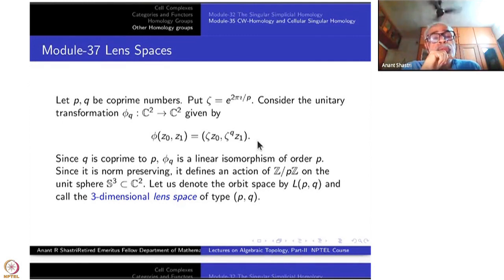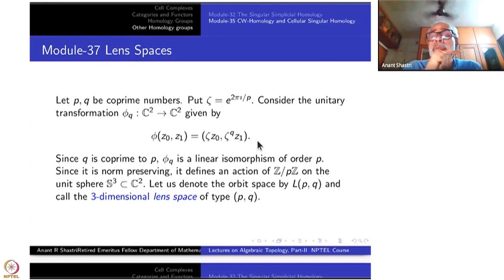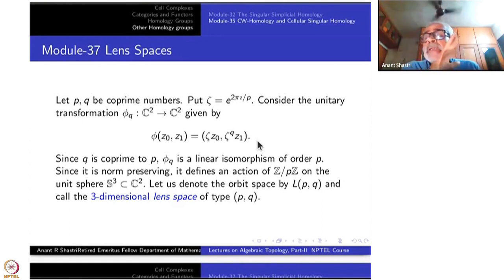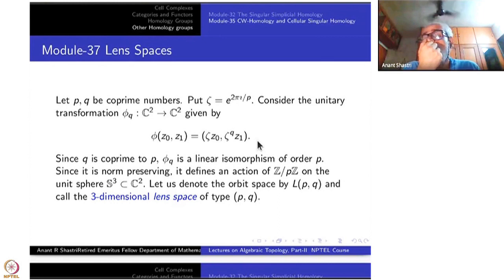We begin with two numbers P and Q which are co-prime to each other. They need not be prime numbers; they are co-prime, that is all. Put zeta equal to e raised to 2πi/P, so that zeta raised to P is 1, and zeta is a primitive P-th root of unity. You could have taken any other primitive root also; it won't matter, but let us fix one.